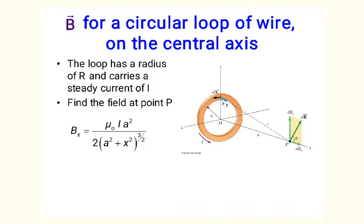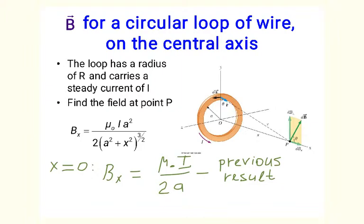It is also easy to calculate the magnetic field at point P on the central axis of the loop, but not exactly at the center O. In this case, only the x-component of the field is non-zero. Components perpendicular to the axis cancel because of the symmetry of the system. The x-component depends both on the radius a of the loop and the distance x from the center. If we set x equal to zero, we recover the previous result mu_0 times i divided by 2a, the field at the center of the loop. As you see, the magnetic field on the axis depends only on x squared, not on x itself, and it always points in the positive x direction regardless of whether the loop is to the left or to the right of the measurement point.